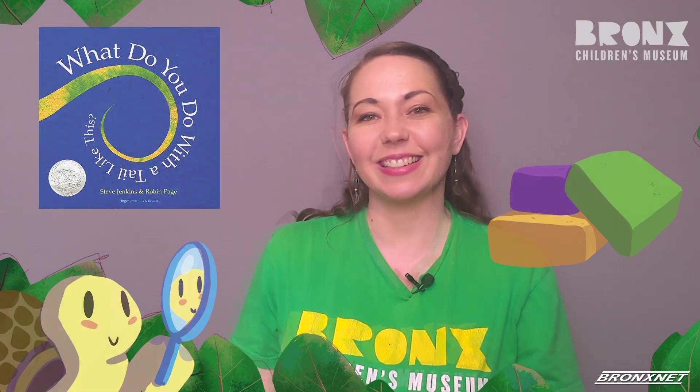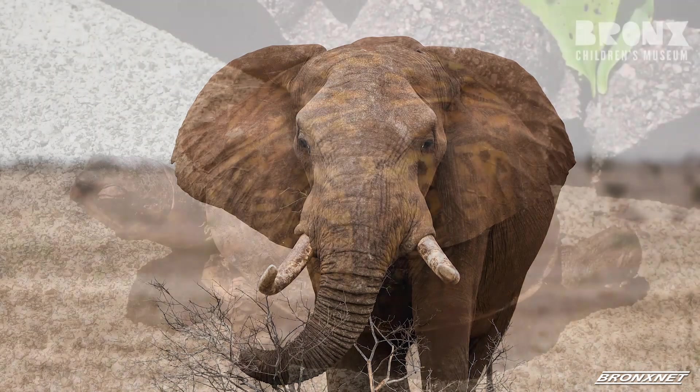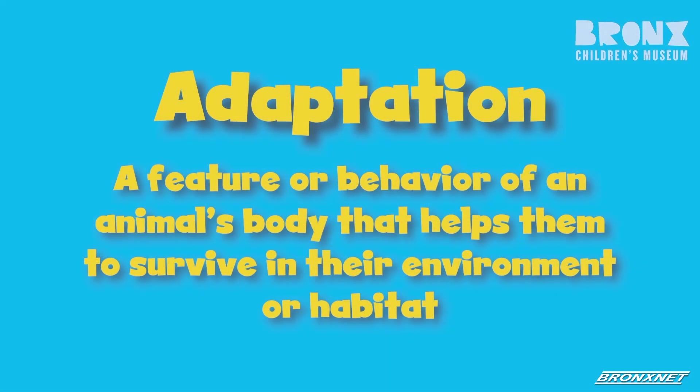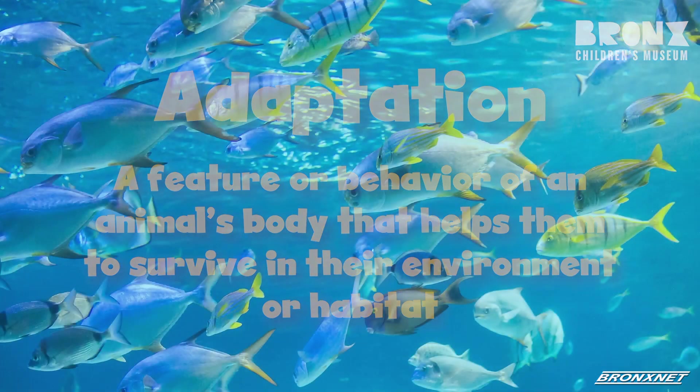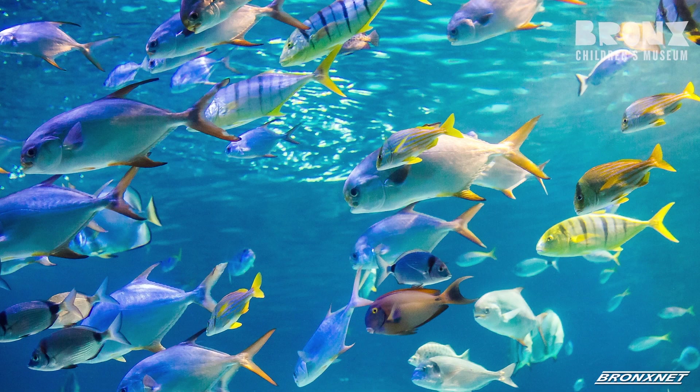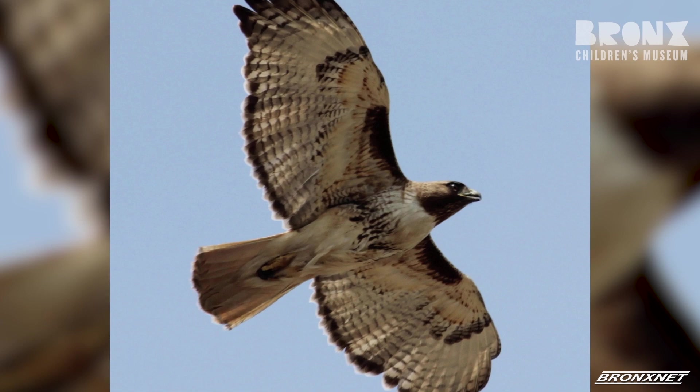First, we're going to read a book. Then we're going to take a look at some special Bronx animals. And then I'll show you how to do a clay activity where you get to build your own animal with its own cool forms and functions. Have you ever noticed how long an elephant's nose is, or how hard a turtle's shell is? Each animal is specially adapted to live in a particular environment or habitat. An adaptation is a feature of an animal's body or behavior that helps them to survive. For example, fish have long oval-shaped bodies which help them swim quickly through the water, and a red-tailed hawk has very light feathers and hollow bones which help it fly through the air.